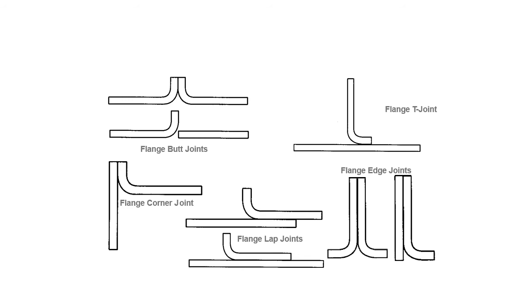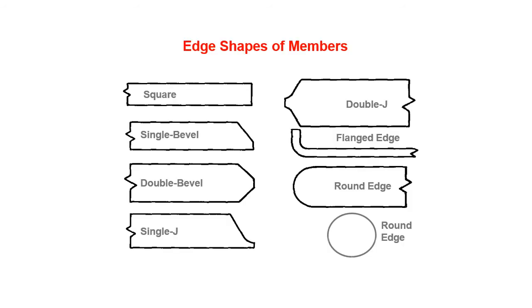Now we're going to talk about the edge shape of members. You've got a square, single bevel, double bevel, single J, double J, flanged edge, round edge, and other variations. These are going to come into play when you start putting these together.